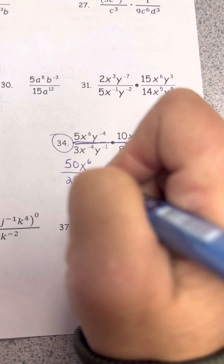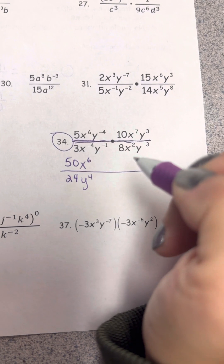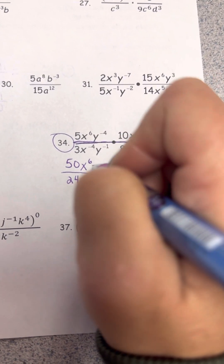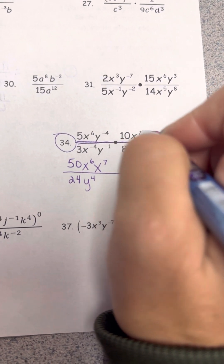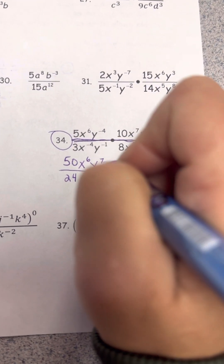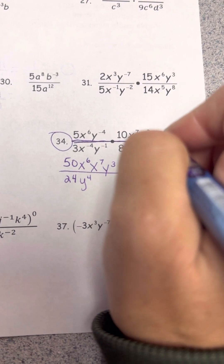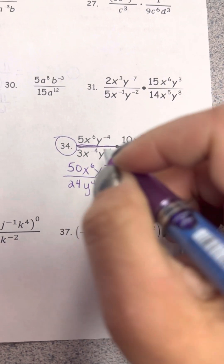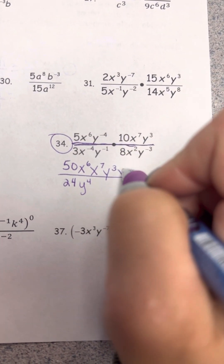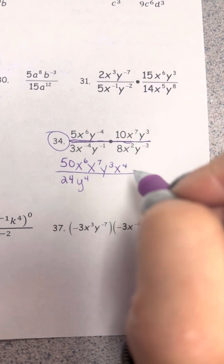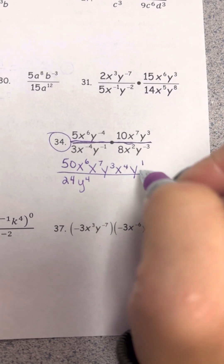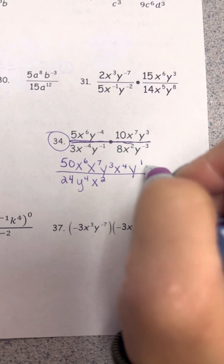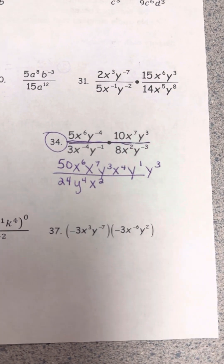So: x to the sixth has a positive exponent — it stays in the numerator. y to the negative fourth moves to the denominator. x to the seventh stays in the numerator. y to the third stays in the numerator. In the denominator: x to the negative fourth moves to the numerator; y to the negative first moves to the numerator. x squared stays; y to the third from the denominator moves to the numerator.